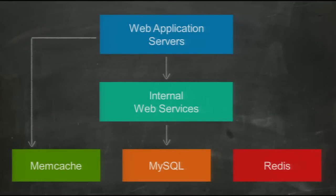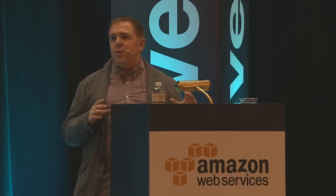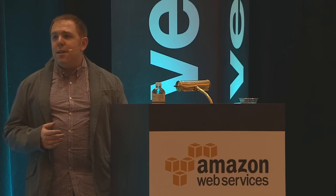So a little bit about our technical architecture: our main code base is a Python web application, and we started using the Django web framework, but over time we've replaced a lot of pieces of that as our needs have become increasingly specialized. We have replaced a monolithic web application with a service-oriented architecture with a series of internal web services, and those web services talk to back-end databases running MySQL as well as caches running Memcache and Redis, which is an in-memory database with great support for data structures like lists and sets.